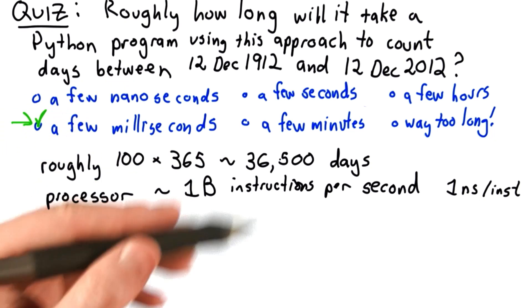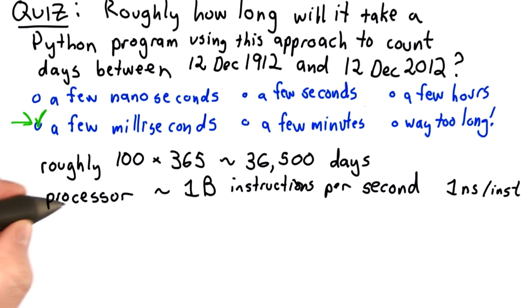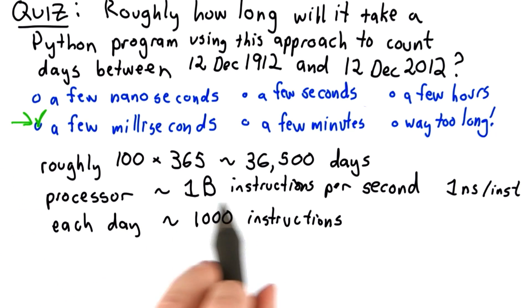So we're going to estimate that for each time through this loop, we're going to need about 1,000 instructions. And that's the hardest part of this to guess. And that's a very rough number that's going to depend on a lot of specifics about how we write the Python code. But it's going to be somewhere between a few hundred and, say, 10,000 instructions if we do it in a sensible way. So we'll estimate 1,000 instructions.